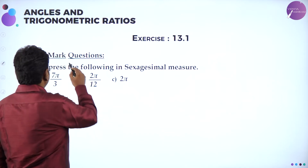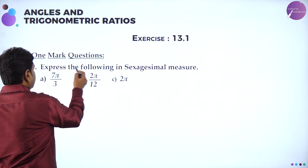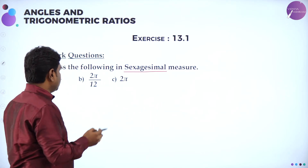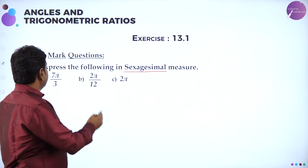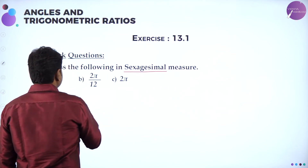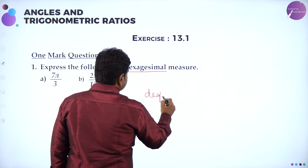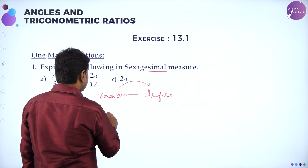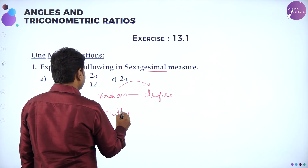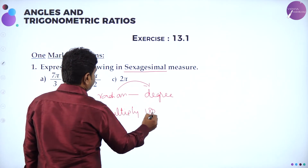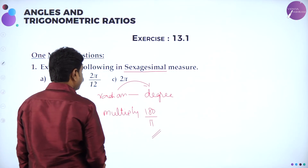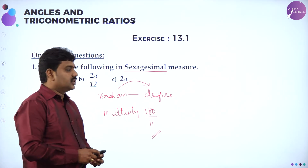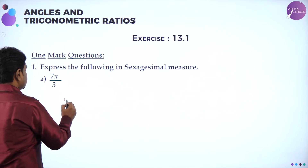Next, express the following in sexagesimal measurements. 'Sexagesimal' means they want you to convert to degrees. They gave radians and you need to convert to degrees. To convert radian to degree, multiply by 180/pi. The first question is 7pi/3 radians.